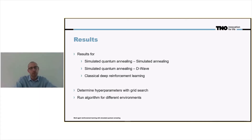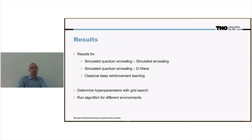There are some hyperparameters that we have to define, for instance the grid layout, the number of samples that you take, and the connectivity between the qubits. We determine these hyperparameters with a grid search for one environment, and we use those hyperparameters for all the other environments as well.